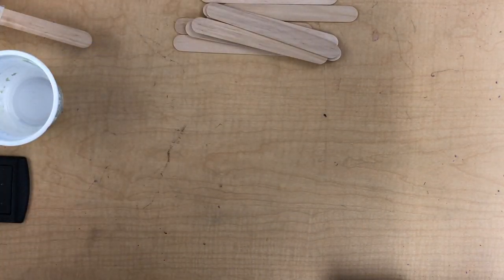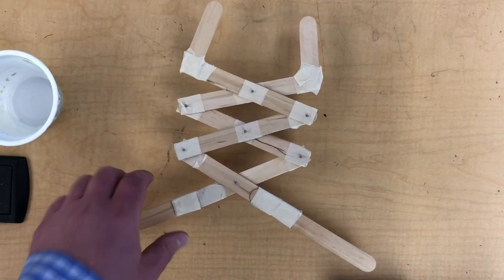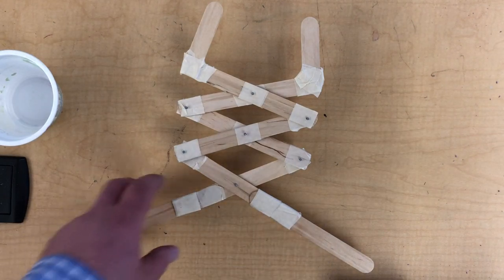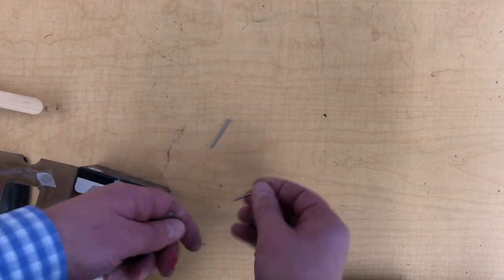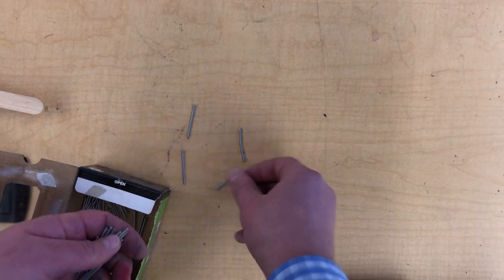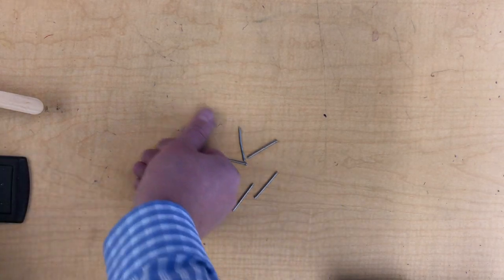Once you'll have nine popsicle sticks, also you will need to use some nails. Let's see how many nails we need. So for the sake of this, I will need one, two, three, four, five, six, seven. So we need seven nails. So these are nice, soft, galvanized nails.